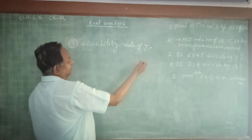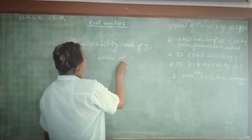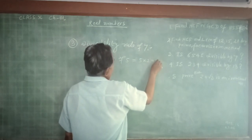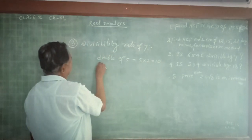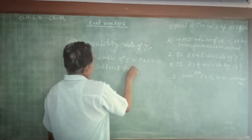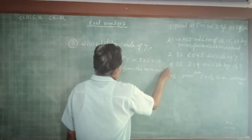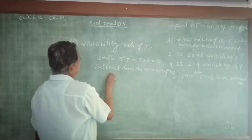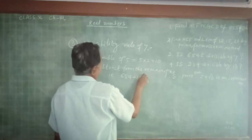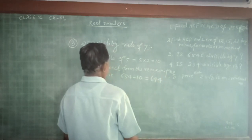So double the last digit: double of 5 is 5 × 2 = 10. Subtract from the remaining number: 654 minus 10, which is equal to 644. Still it is a larger number.